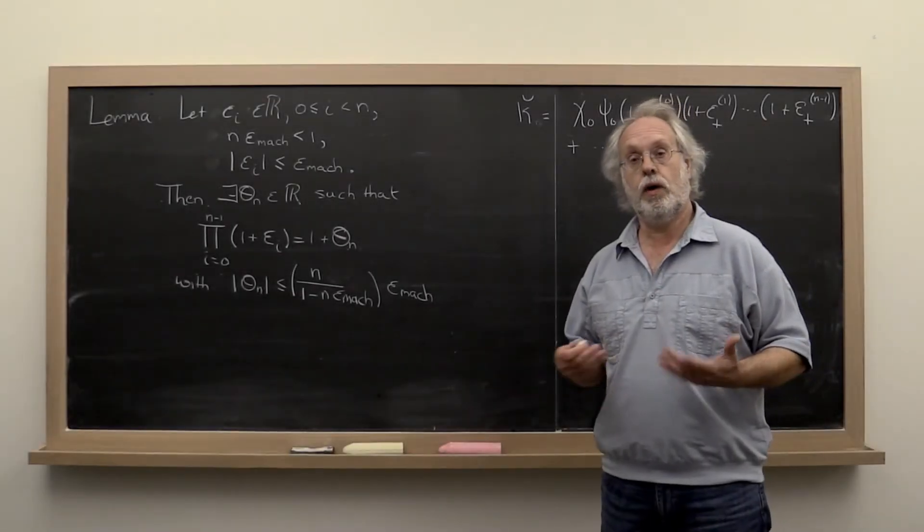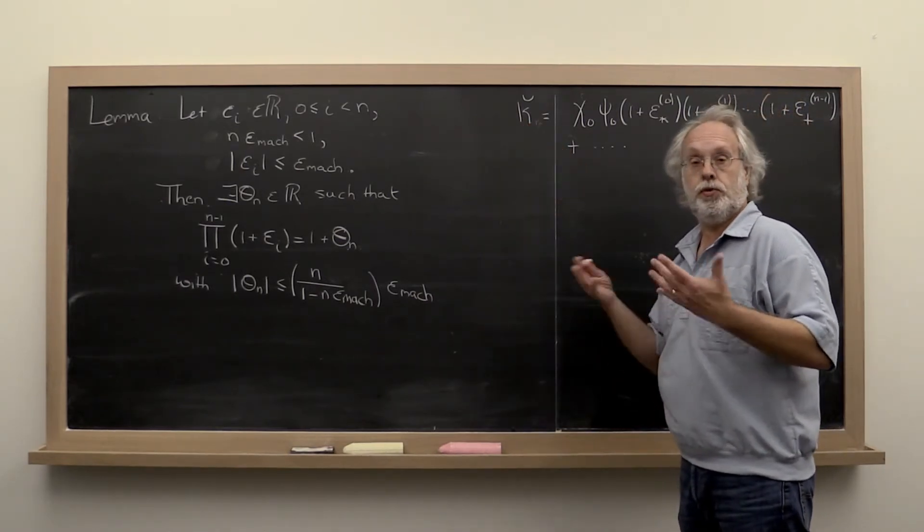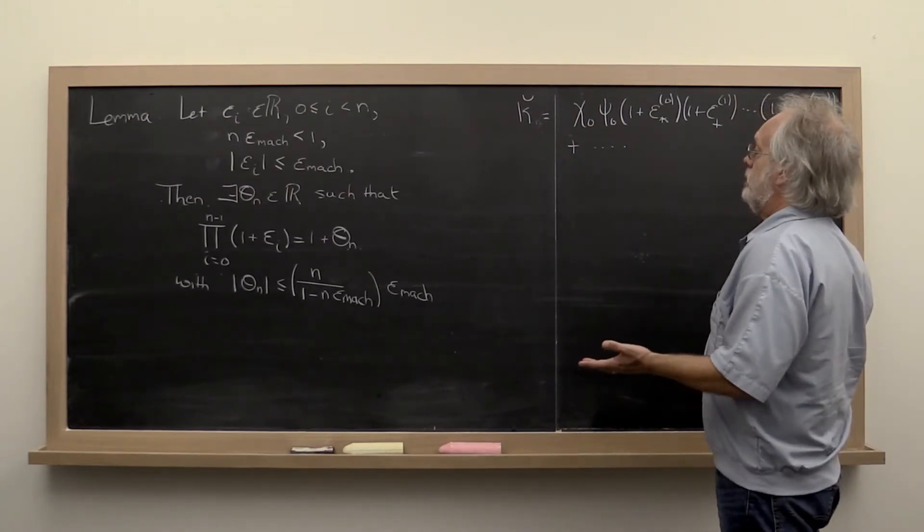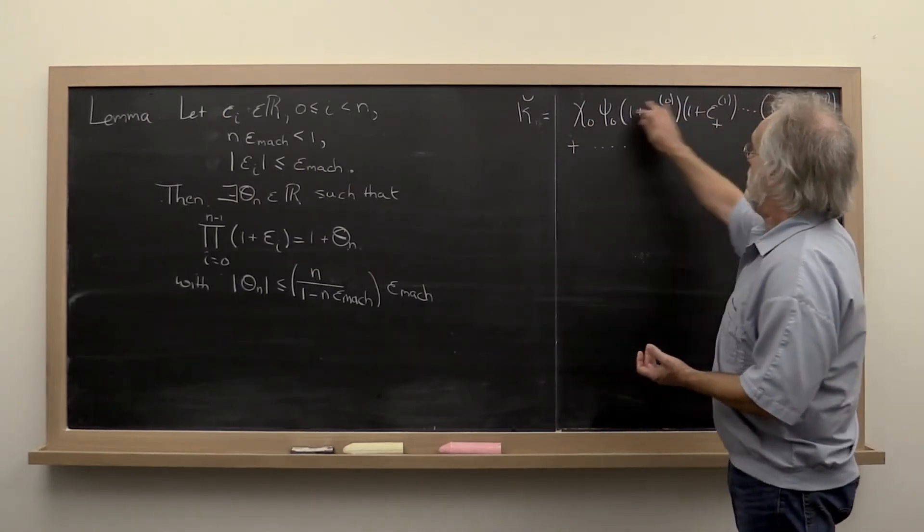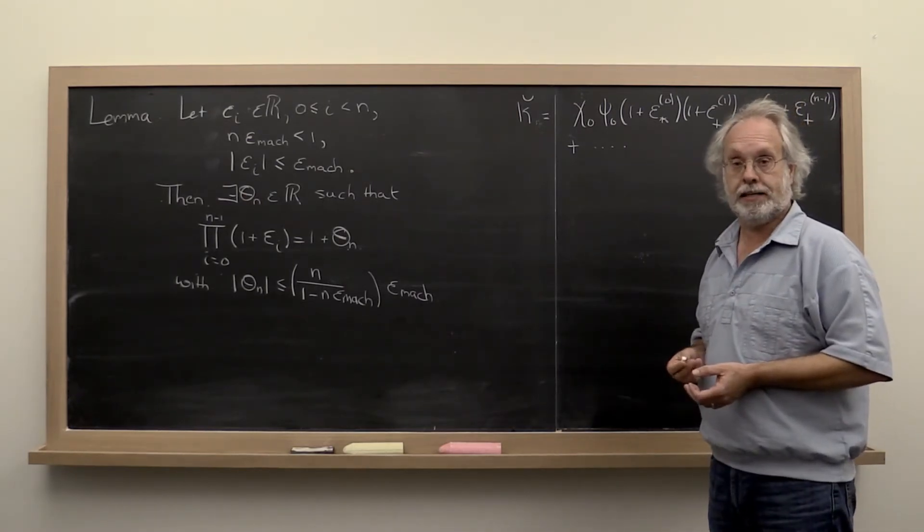In the last video we arrived at this point where the computed value when you compute an inner product was given by the exact result except with an accumulation of these 1 plus epsilon factors.